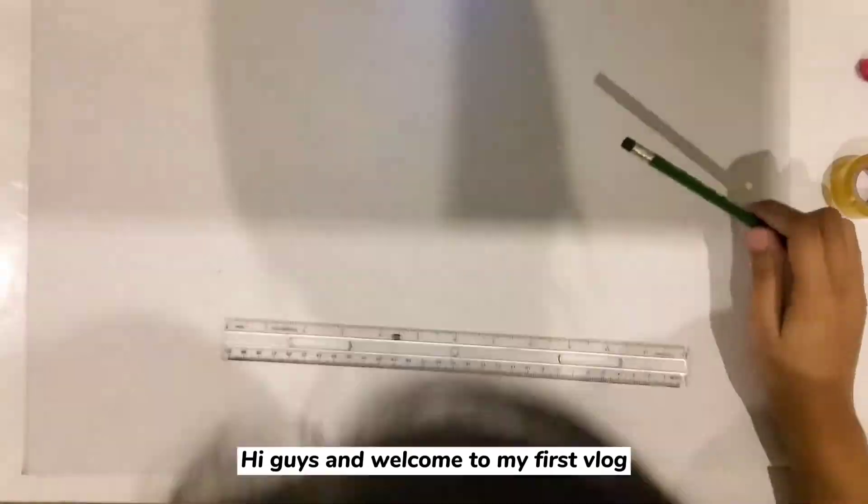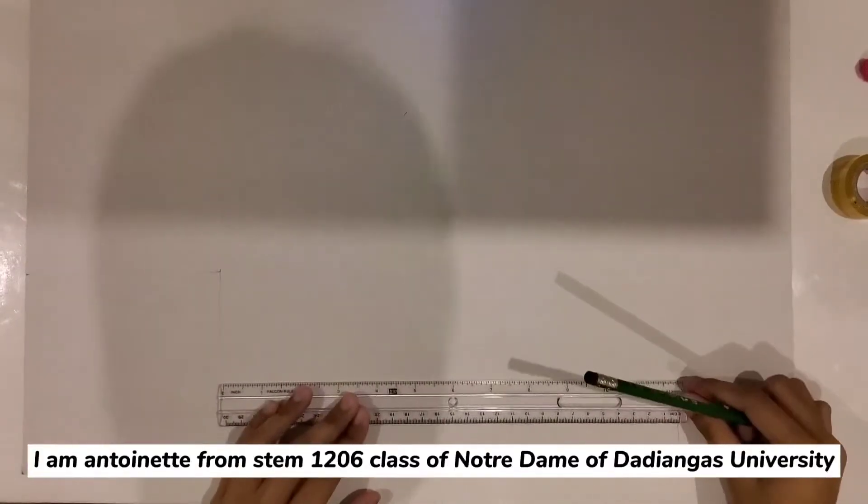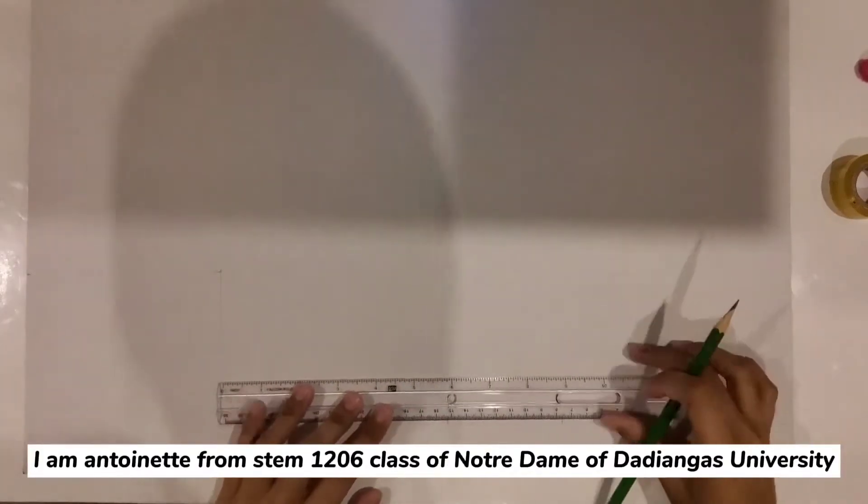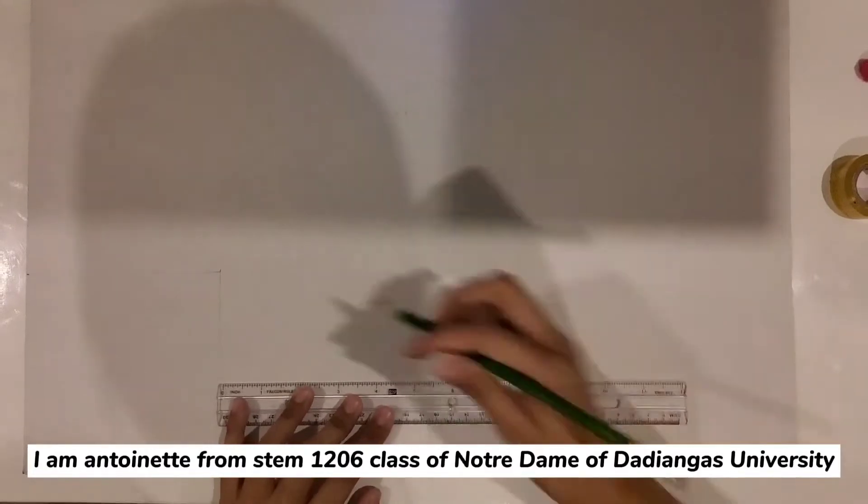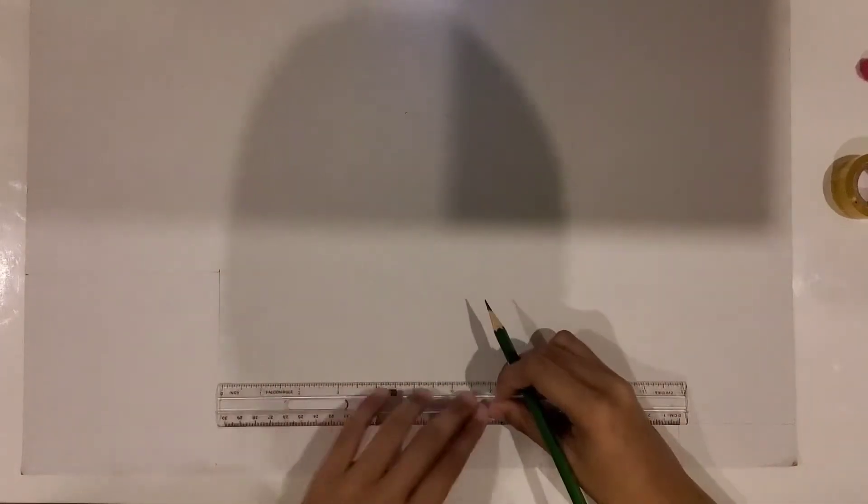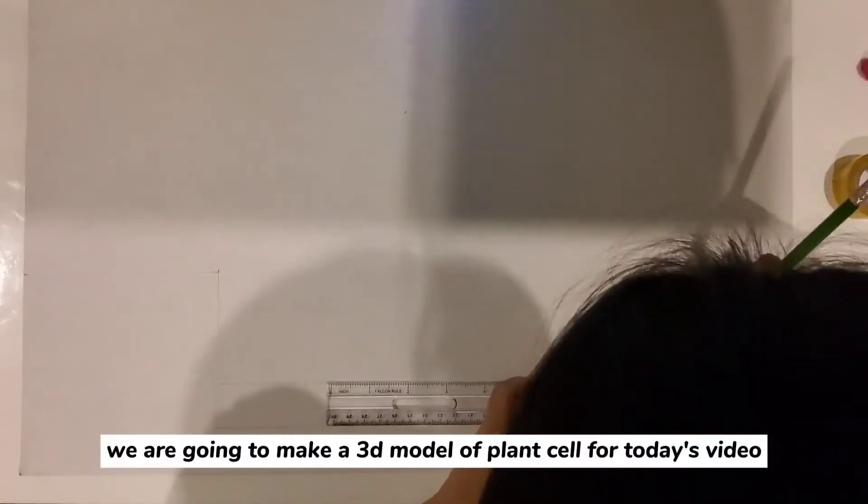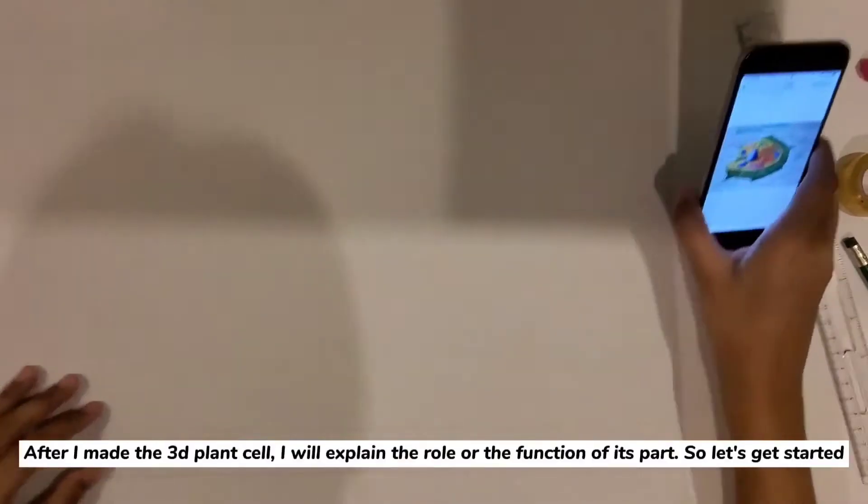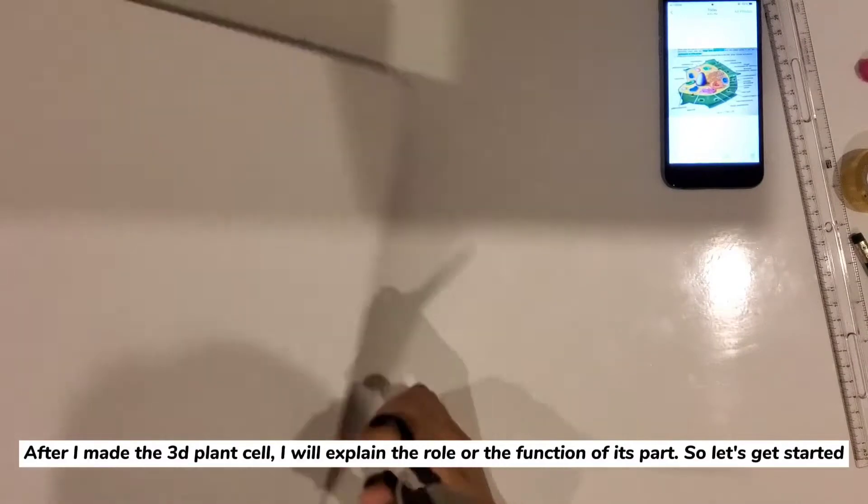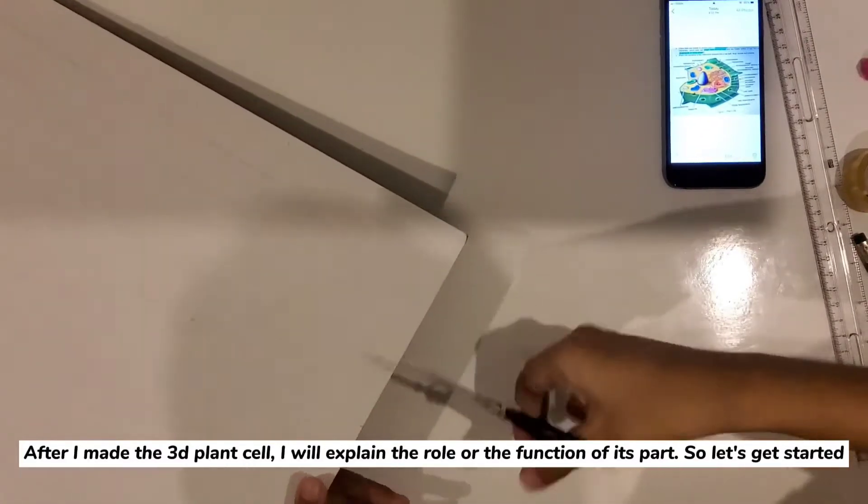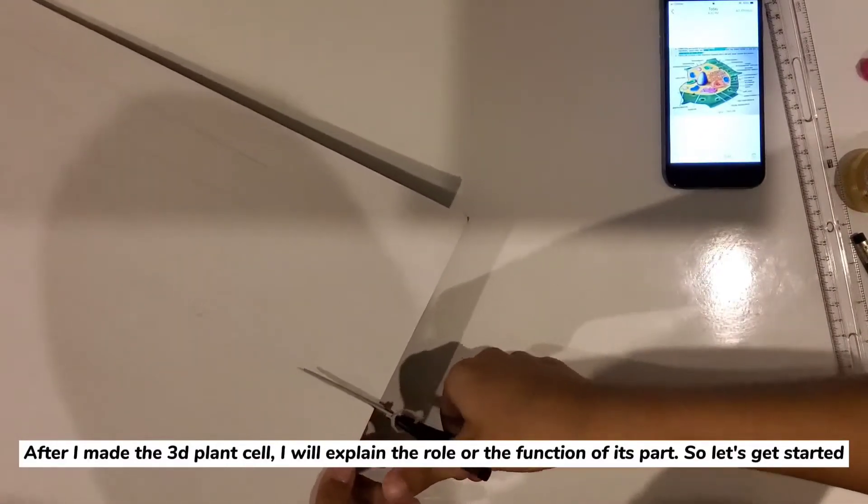Hi guys and welcome to my first vlog. I am Antoinette Lois Nantinen from 1206 class of Notre Dame of the Youngest University. We are going to make a 3D model of a plant cell for today's video. After I made a 3D plant cell, I will explain the role or the function of each part. So let's get started!